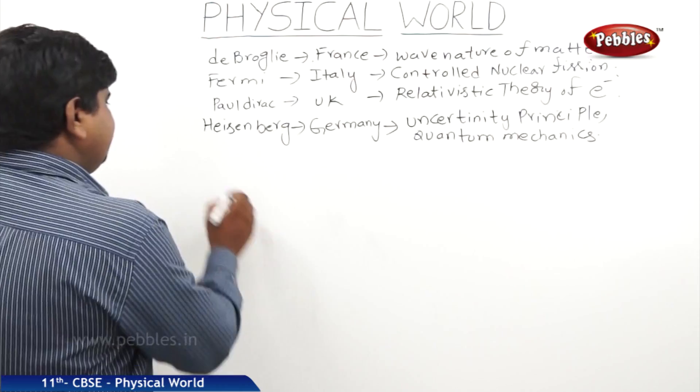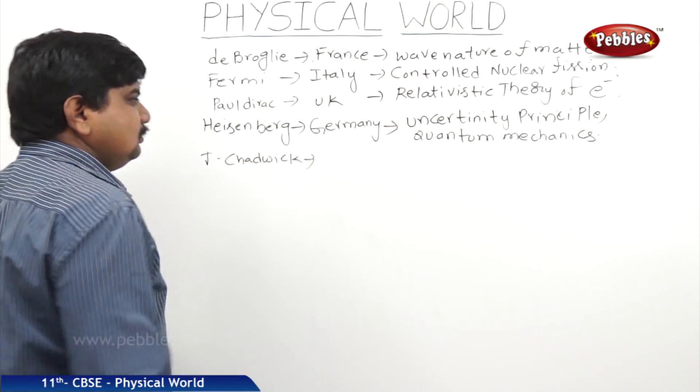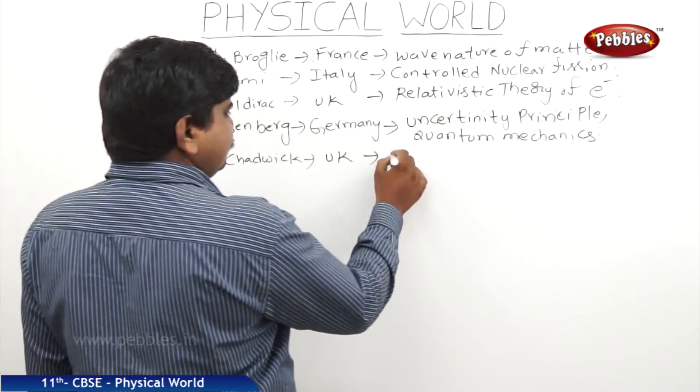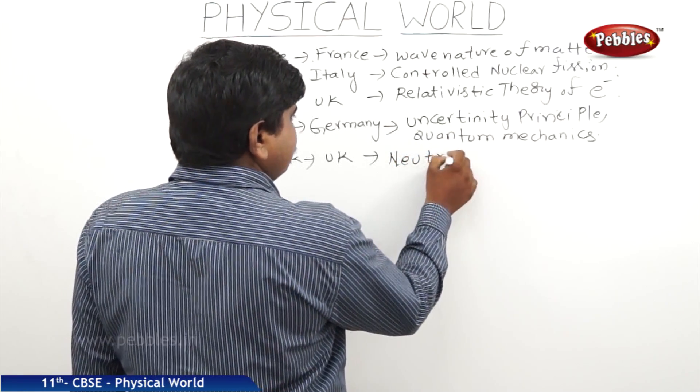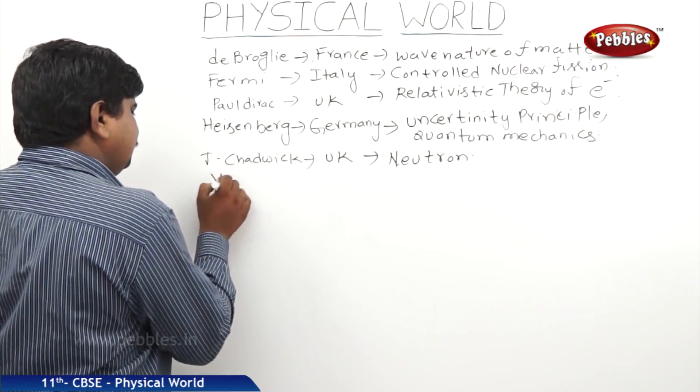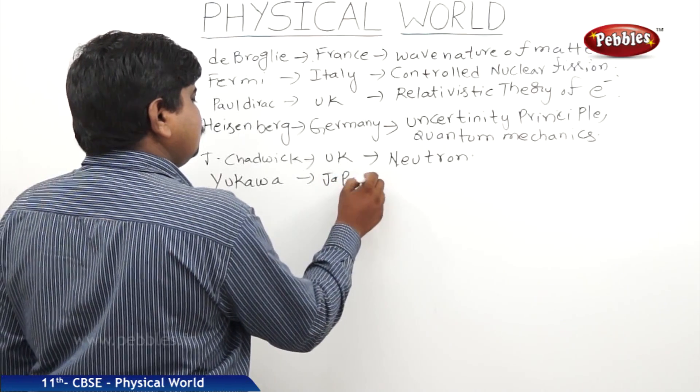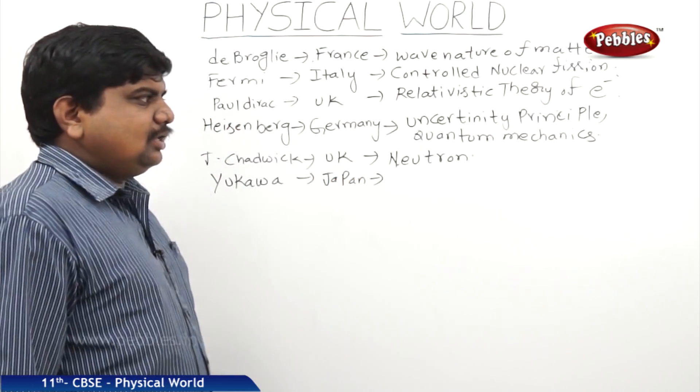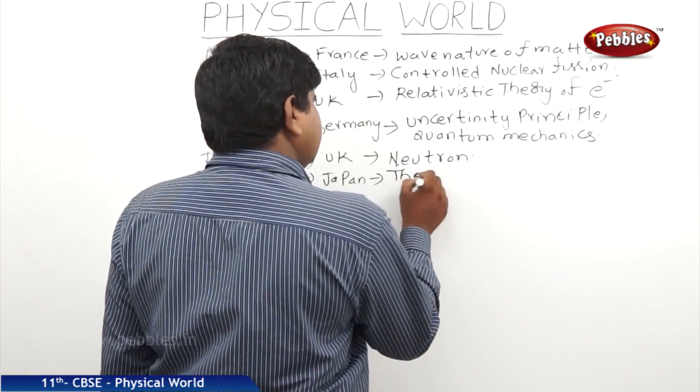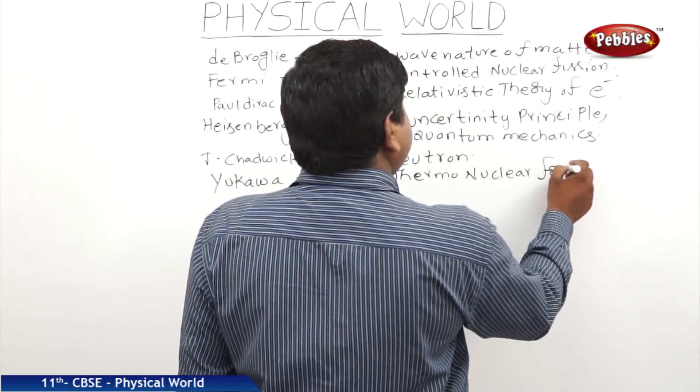Next one is James Chadwick from UK, who has discovered the neutron. The next great scientist was Yukawa from Japan, who has discovered the thermonuclear forces.